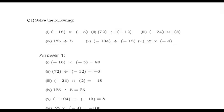Third: negative 24 multiplied by 2 — the answer is negative 48. Fourth: 125 divided by 5 — the answer is 25. Fifth: negative 104 divided by negative 13. Since both numerator and denominator have negative signs, they cancel out. Dividing 104 by 13 gives positive 8. Sixth: 25 multiplied by negative 4 — the answer is negative 100.